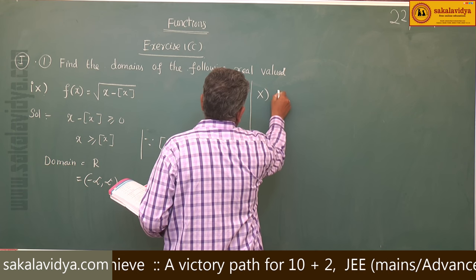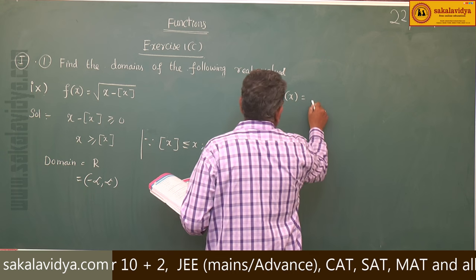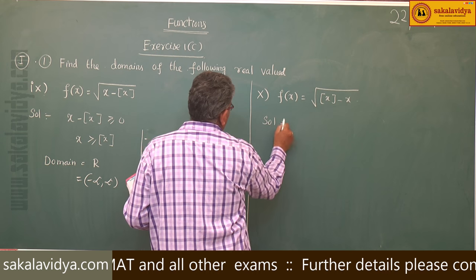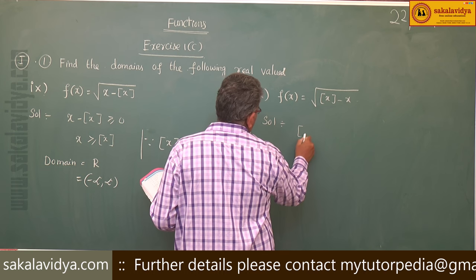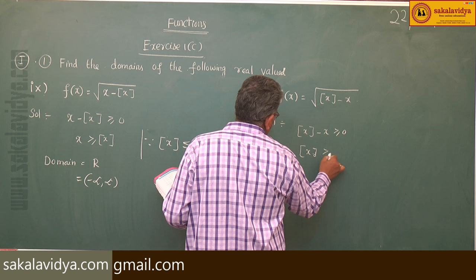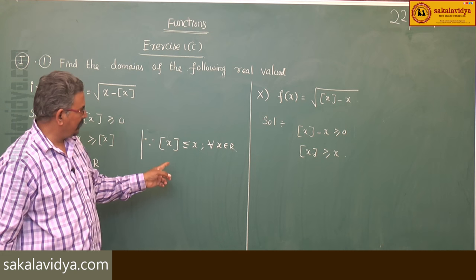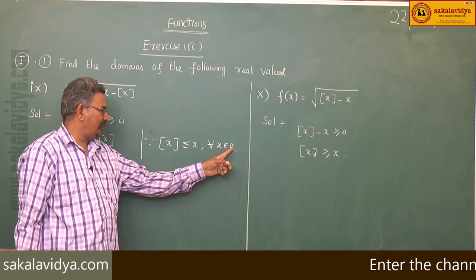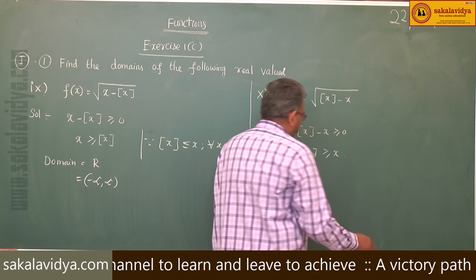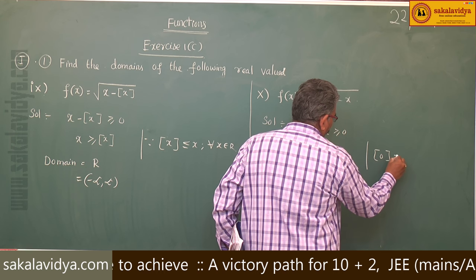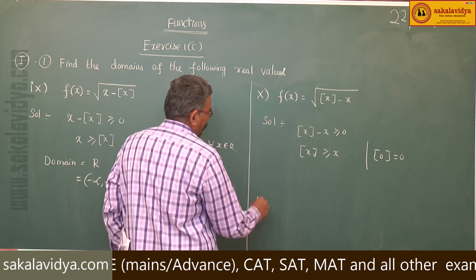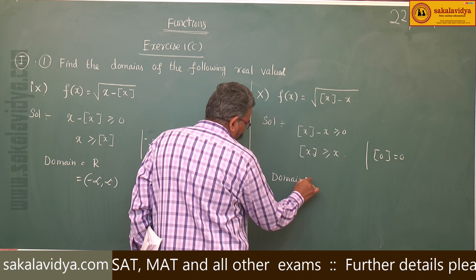Tenth problem: f of x is equal to root of [x] minus x. Here [x] minus x must be greater than or equal to 0, meaning [x] must be greater than or equal to x. But we already know [x] is always less than or equal to x for every x in ℝ. The only case where [x] equals x is when x is an integer — specifically, putting x equal to 0 gives [0] equal to 0, which is true. Therefore, domain is equal to only one element: {0}.